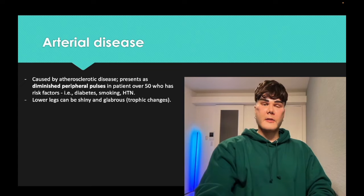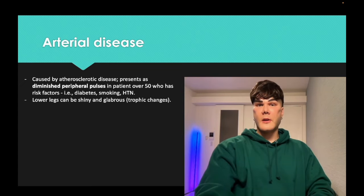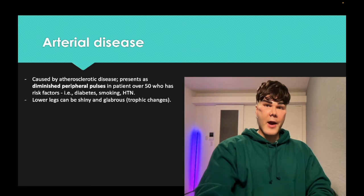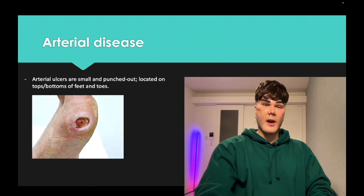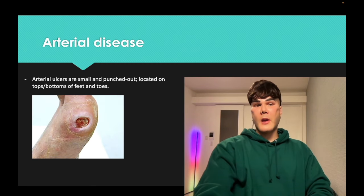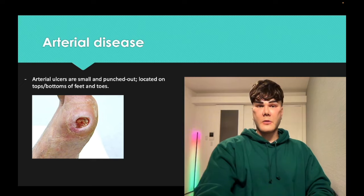The lower legs can have trophic changes — shiny glabrous skin. Glabrous means without hair, so you can lose the hair on the lower legs. You need to be able to diagnose this. Spot diagnosis: arterial ulcer.